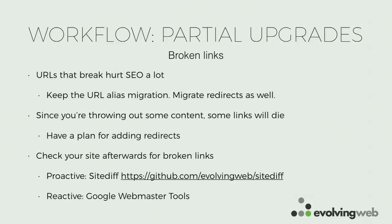A really important point: if you do this approach, broken links are terrible. Google will hate you if you have broken links. So if there's a URL alias migration, you want to keep that one for sure — even if it doesn't seem like the kind of thing you're interested in — because it'll point to all your new nodes. But if you're throwing out content, even that won't help because there will be dead links. You want to have a plan for that: identify the things you're filtering out and add aliases for them manually maybe, or use our SiteDiff tool to compare the new and old site and figure out what's broken, or wait until you've deployed your site and use Google Webmaster Tools' top broken links page to figure it out and fix it after.